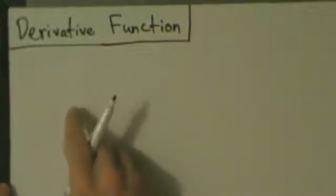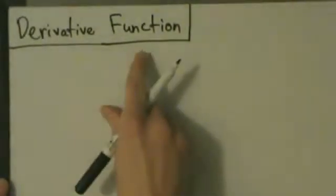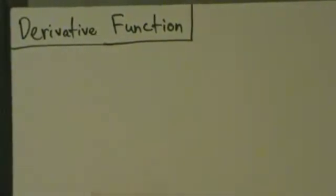The answer is no — thank God we don't. The reason is we can just find the derivative function. So instead of finding the derivative at a point, we just find the derivative as a function and then go from there. That might sound kind of weird or confusing, but once we start doing this with some examples, it'll make a lot of sense.